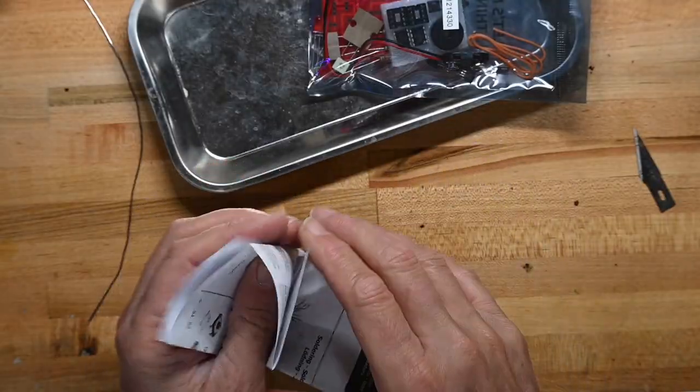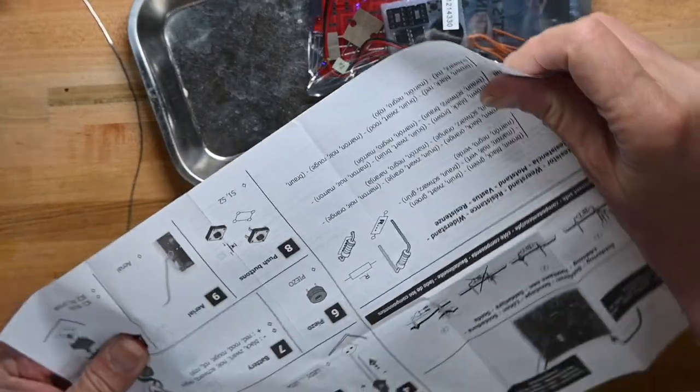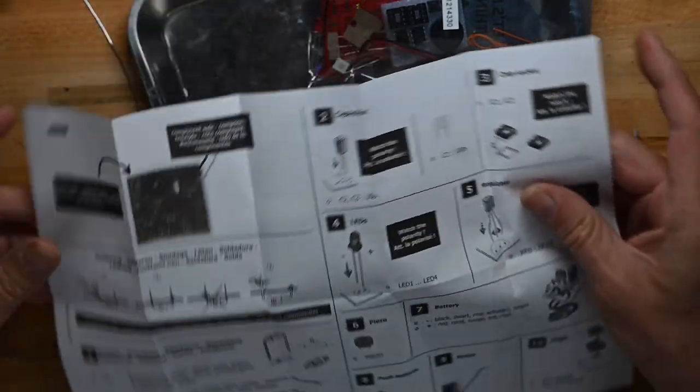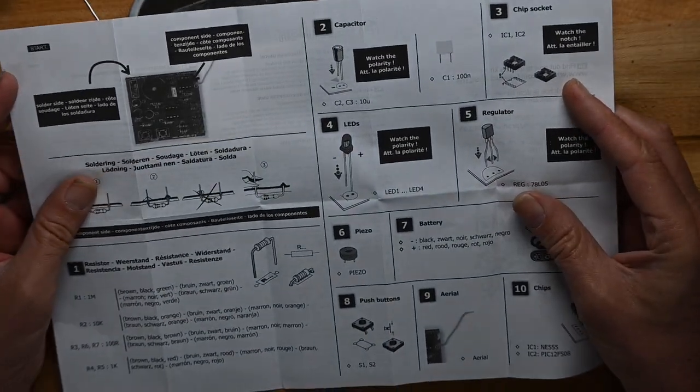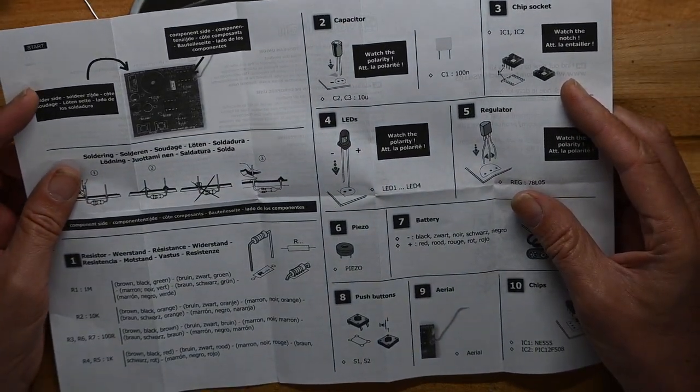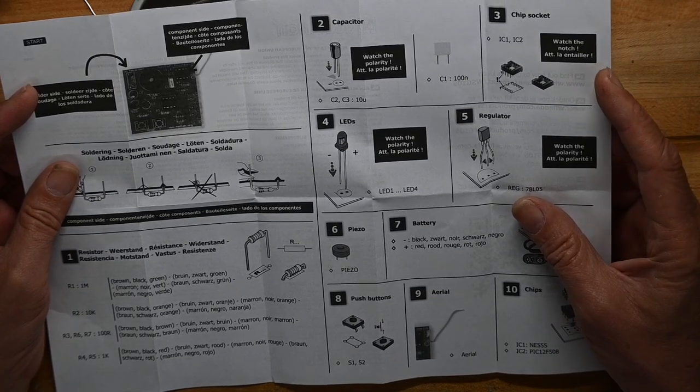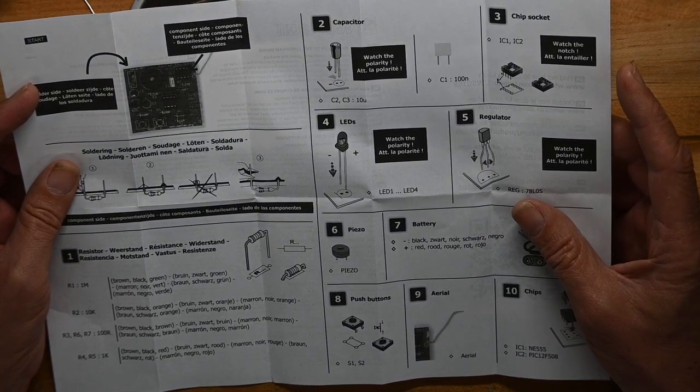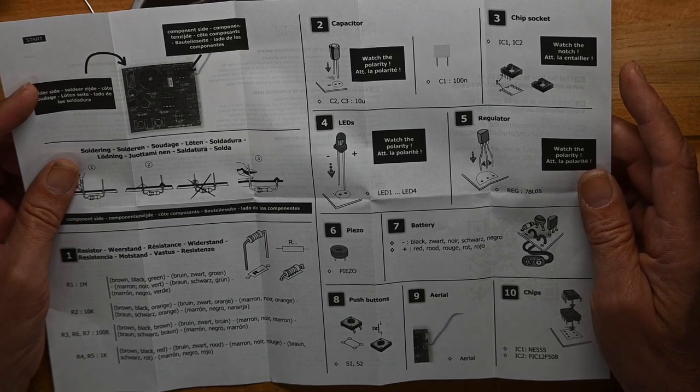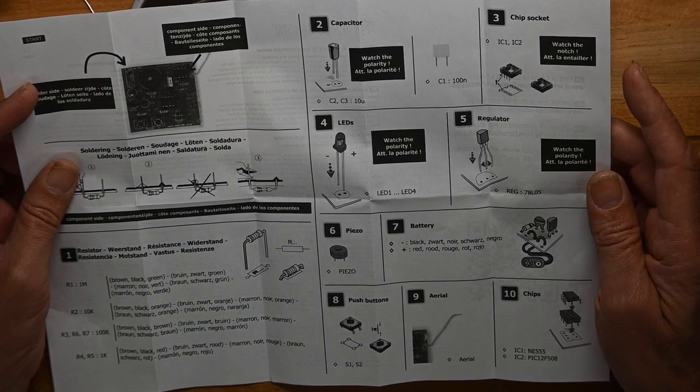Here we've got our instructions. It's pretty straightforward. Put the resistors in, put the capacitors in, chips, LEDs. Oh, it's not a transistor, it's a voltage regulator.